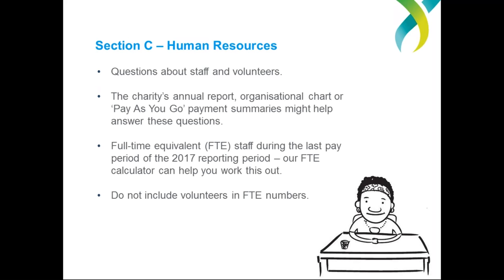We also ask how many full-time equivalent, or FTE, staff worked for your charity during the last pay period of the 2017 reporting period. This figure is the number of full-time employees your charity would have if it combined the hours of full-time, part-time, and casual employees. It's important that you do not include volunteer numbers in your FTE staff figure — some charities have been doing this. The FTE figure does not include volunteers, just staff. The 2017 AIS guide has useful guidance and an example showing how to calculate the figure, and the ACNC's FTE calculator can also help you work out this figure accurately.